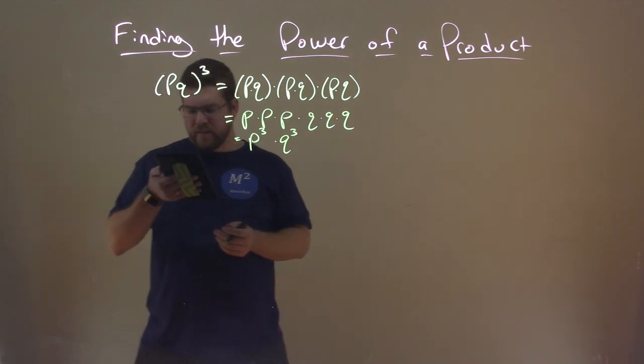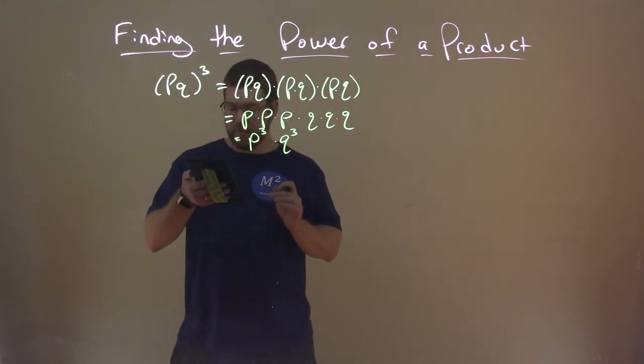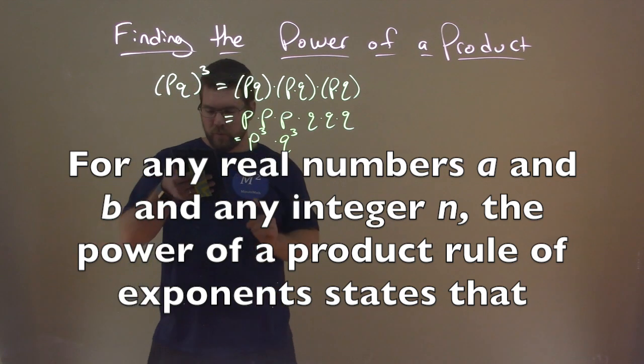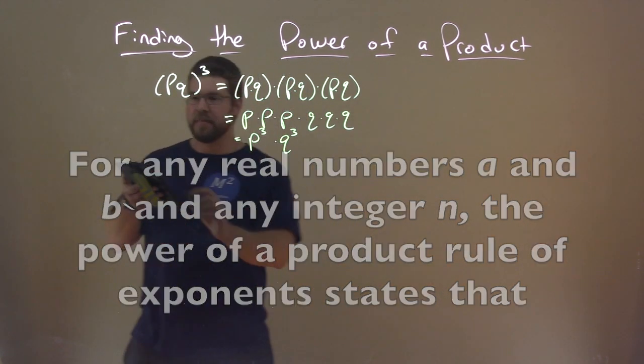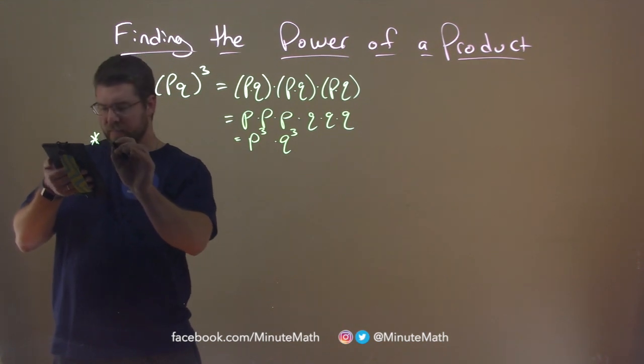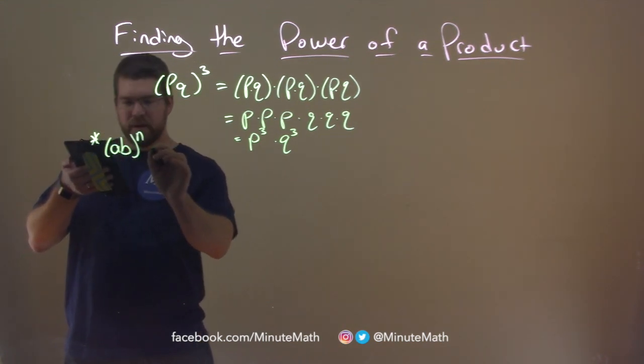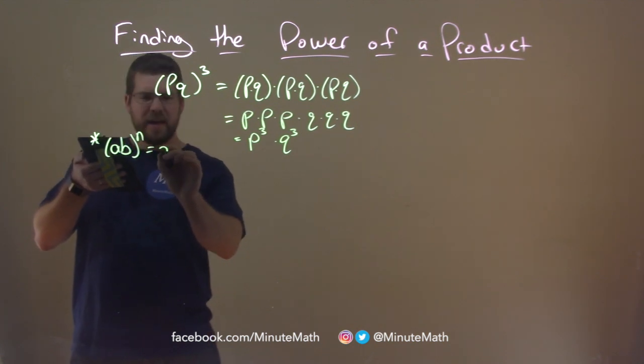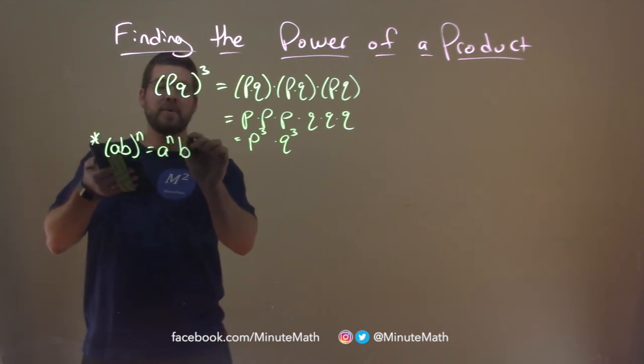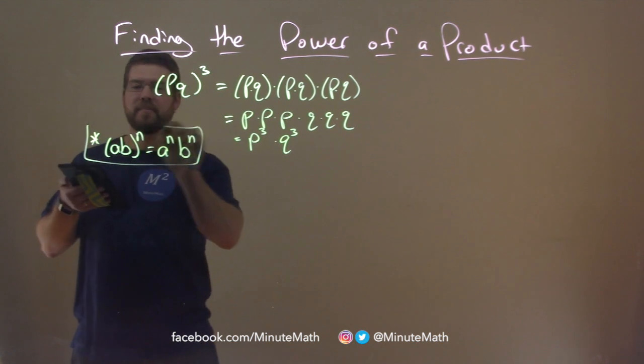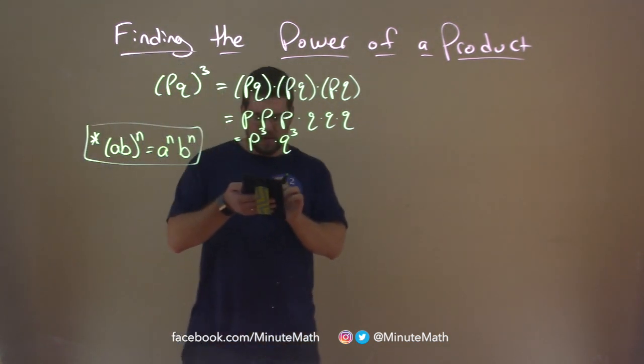Our rule states the power of a product rule of exponents is: a, b to the n power is equal to a to the n power times b to the n power. And there's our special little rule here.